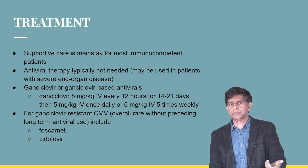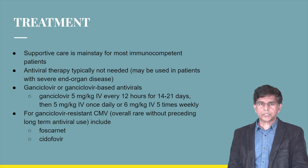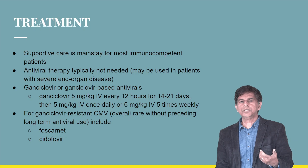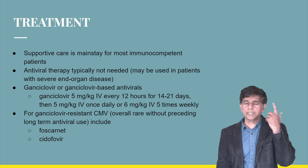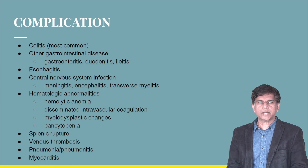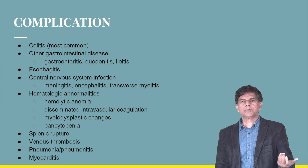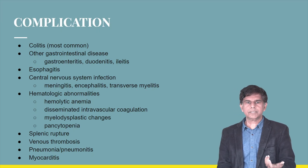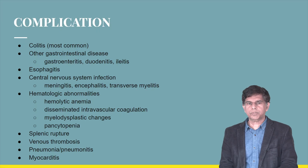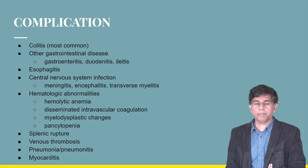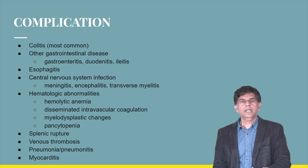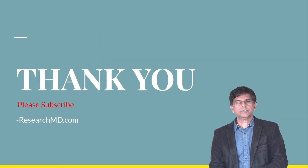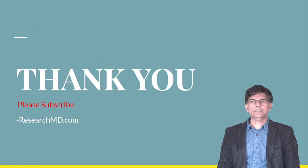Complications: colitis is the most common, along with other gastrointestinal diseases including gastroenteritis, duodenitis, ileitis, and esophagitis. CNS complications include meningitis, encephalitis, and transverse myelitis. Hematological complications include hemolytic anemia, DIC, myelodysplastic changes, splenic rupture, and venous thrombosis. Pneumonia and myocarditis can also occur. Thank you so much for watching our presentation. We'll be back with another presentation soon.